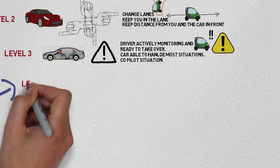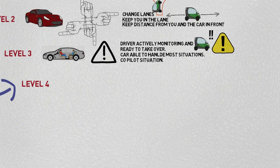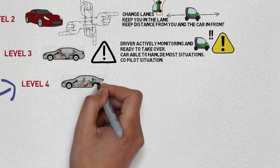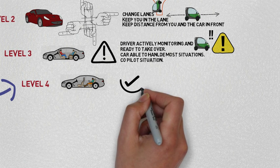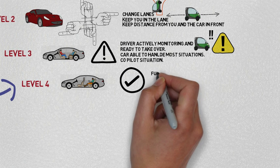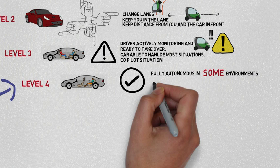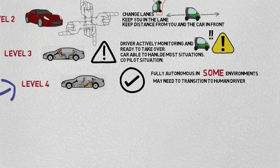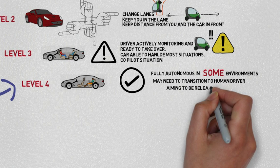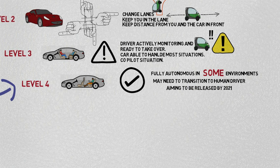Because at level 4 the car is fully autonomous in some environments such as driving on a highway. If it enters an environment outside its operational design domain, the ODD, it will safely transition to a human driver. Ford is aiming to release a level 4 car by the year 2021.